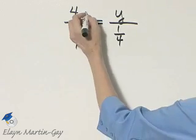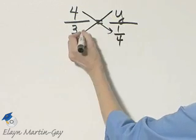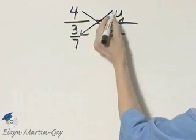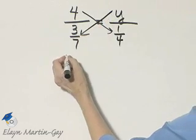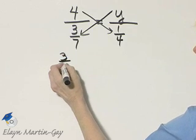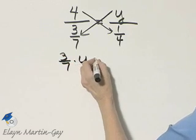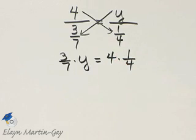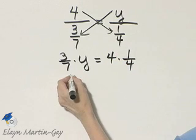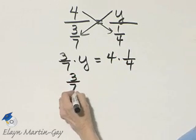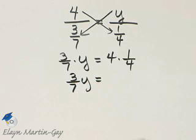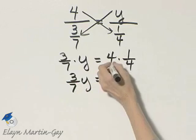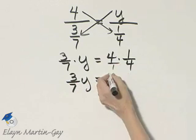We'll solve by setting cross products equal to each other. Here I have Y times 3 7ths, so 3 7ths times Y is equal to 4 times 1 4th. The left side is simply 3 7ths Y. The right side 4 times 1 4th. Notice the 4's divide out and I have 1.